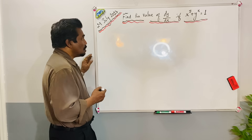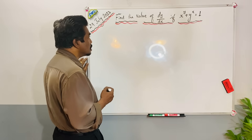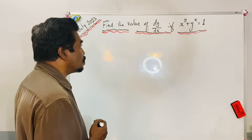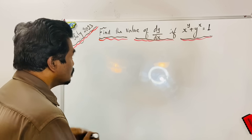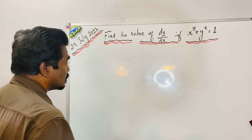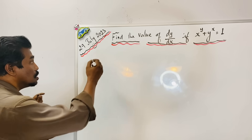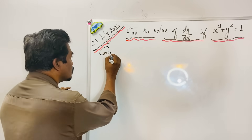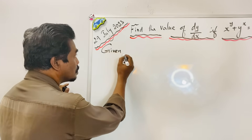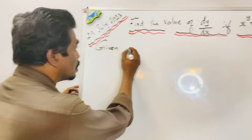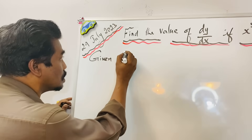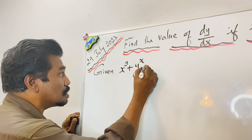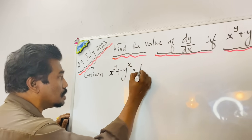Today we are going to find the value of dy by dx if x power y plus y power x equal to 1. This is the given equation: x power y plus y power x equal to 1.